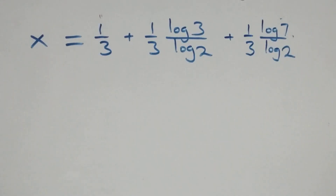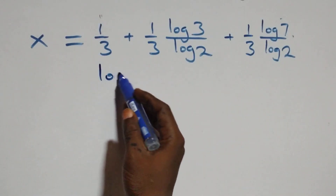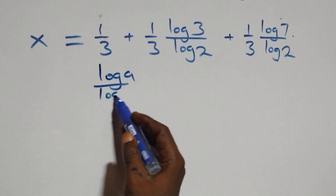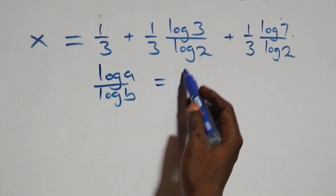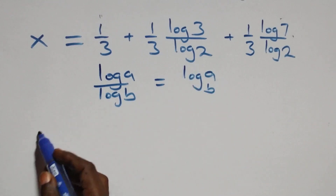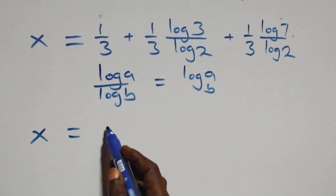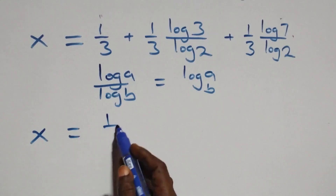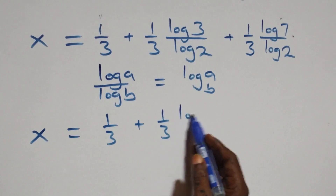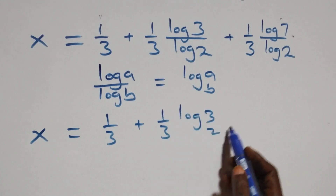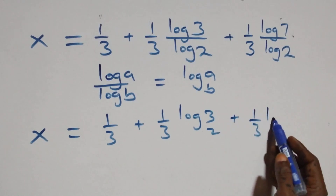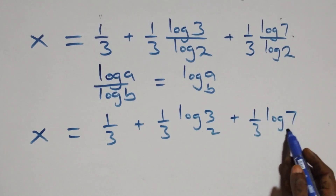We apply the change of base formula: log(A)/log(B) is the same as log(A) to base B. So x equals 1/3 plus (1/3)·log₂(3) plus (1/3)·log₂(7).